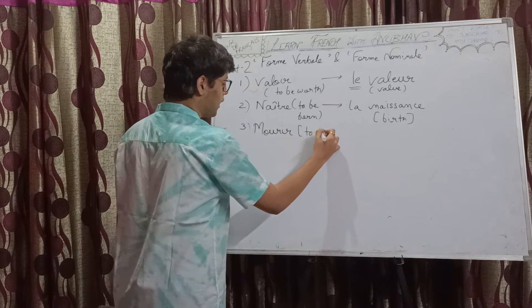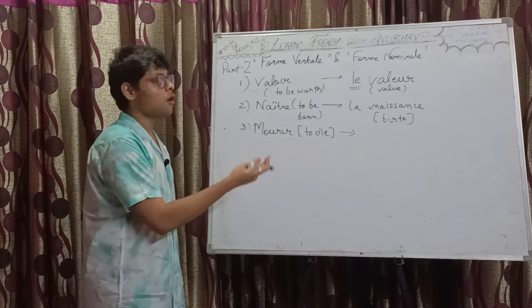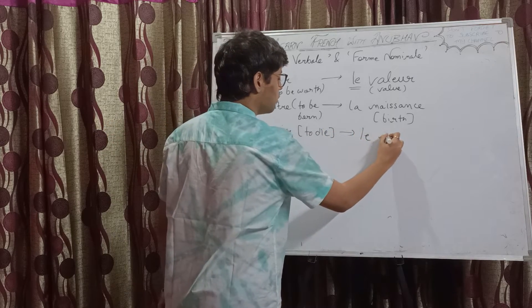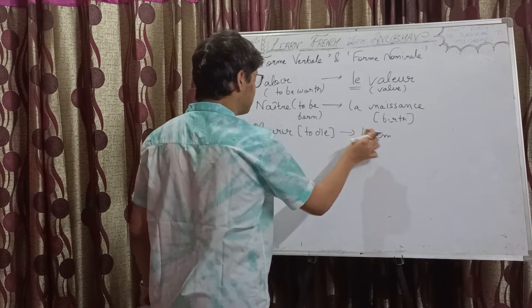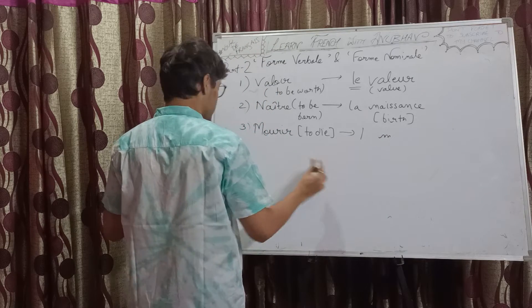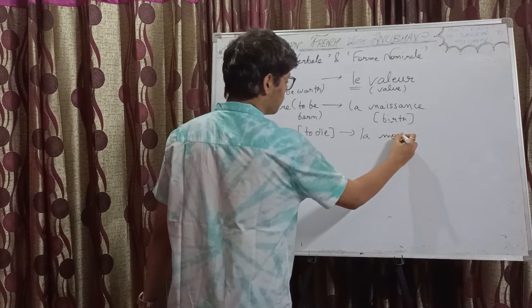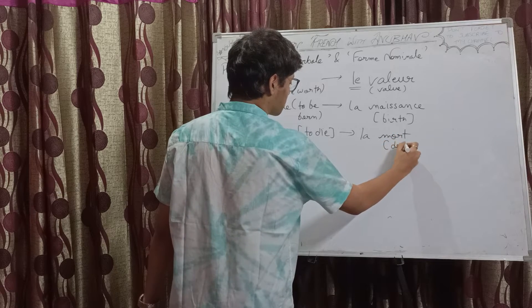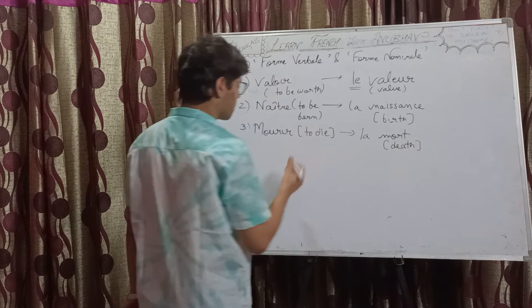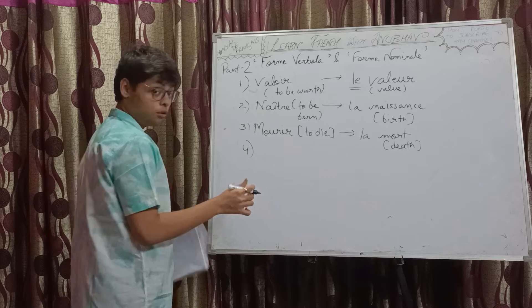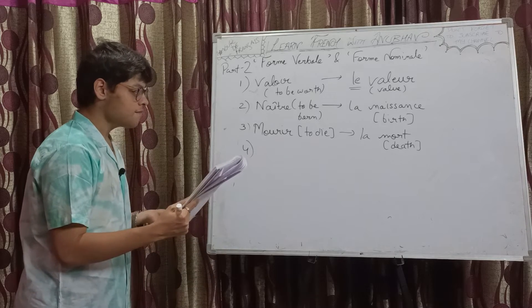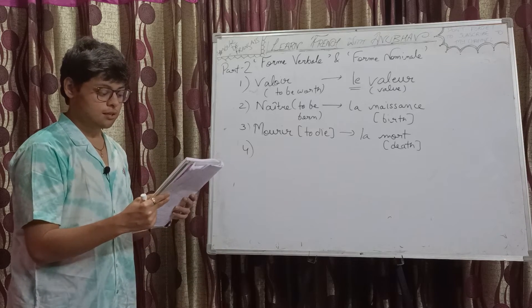Mourir, to die. Its noun form is la mort, death. Fourth one, we have danser. Danser means to dance.